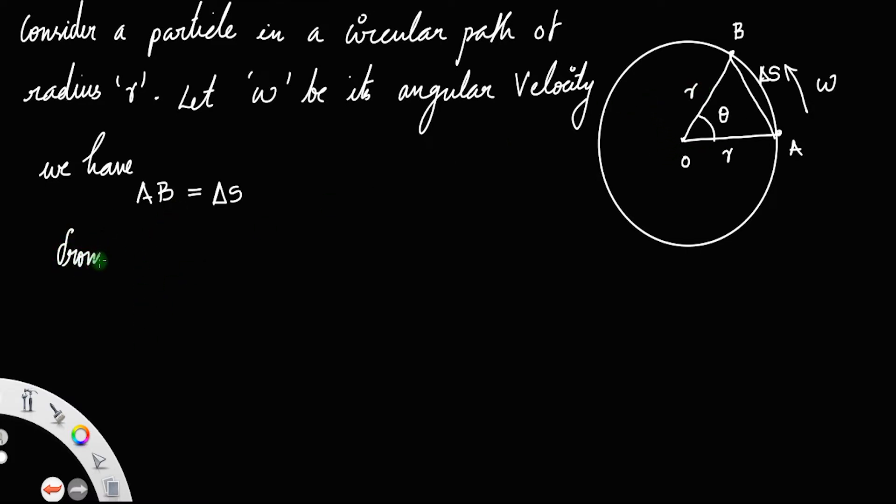From triangle AOB, we have the angle in radians equal to arc length divided by radius. We know this formula.